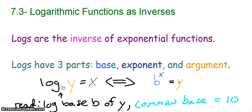So we read this as log base b of y. If we don't have something written there for the base, it's understood that it's base 10, just as if we had a square root, there's no little 2 as the index. It's understood as a 2.